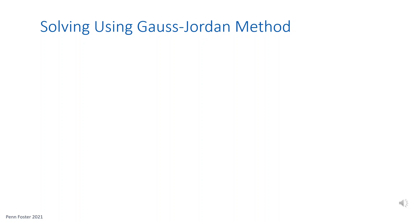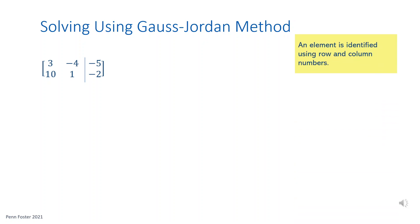Let's go over some terminology used in this video. Each number in a matrix is called an element, located at the intersection of a row and a column, giving each element a unique position defined by its row and column numbers. For example, negative 4 is element 1,2 since it's located at the intersection of row 1, column 2. And 10 is element 2,1.